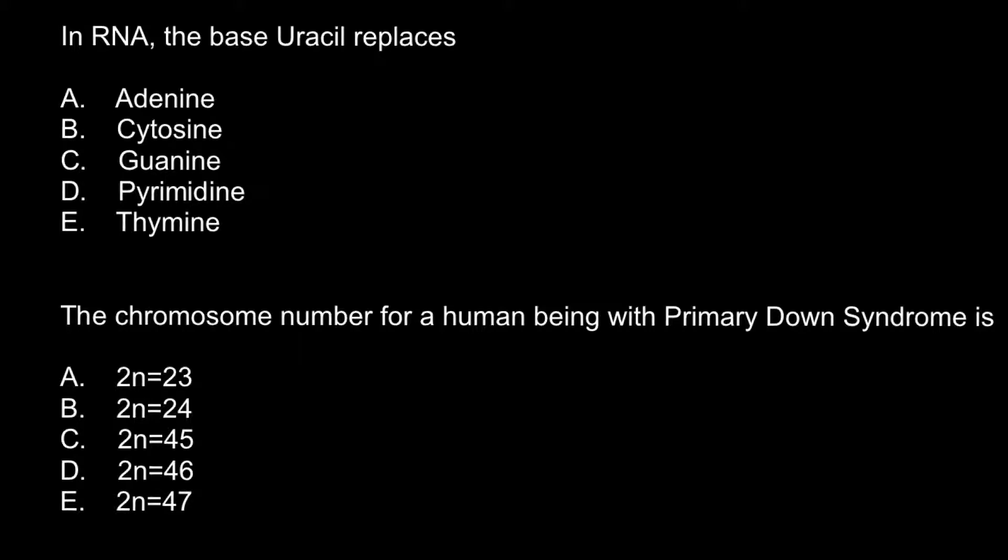Here is the first question: in RNA the base uracil replaces, and here are five answers to choose from. Base pairs as follows: adenine pairs with thymine, and guanine with cytosine. In RNA, actually this can be any RNA, it can be non-coding RNA that we can find in ribosomes, or tRNA or mRNA, thymine would be replaced with uracil.